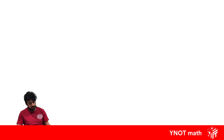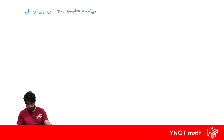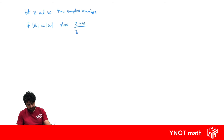Let's look at an example. We're going to let z and w be two complex numbers. If the modulus of z equals the modulus of w, we want to show that z plus w divided by z minus w is purely imaginary. Another way to say that is: if this equals some complex number p, the real part of p must equal 0.